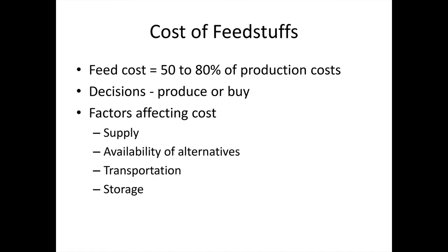An important goal of diet formulation is least cost — to provide the most economical diet that supports the needs of the animal. Feed represents the largest cost in animal production, between 50 and 80 percent depending on the production system. Important decisions include whether to produce or buy a feedstuff, considering the supply, availability of suitable alternatives, transportation costs, and storage costs.